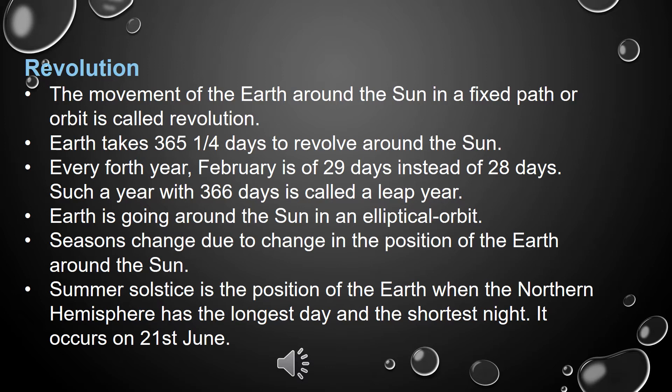In a leap year, February is 29 days instead of 28 days. Such a year with 366 days is called a leap year. The earth goes around the sun in an elliptical orbit.